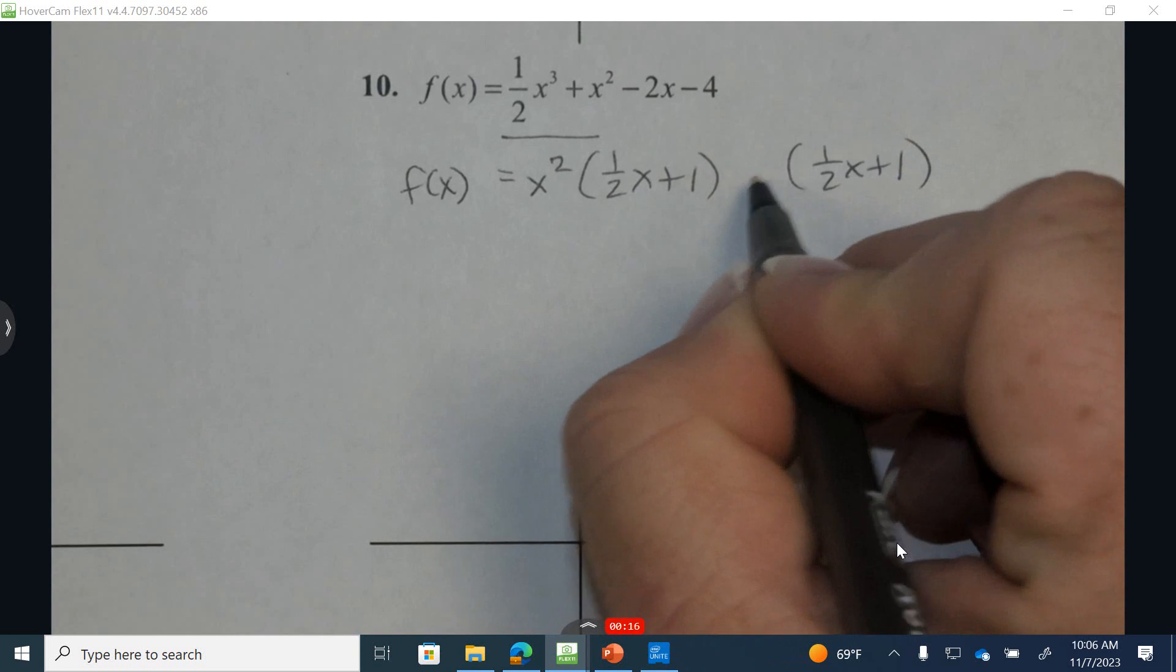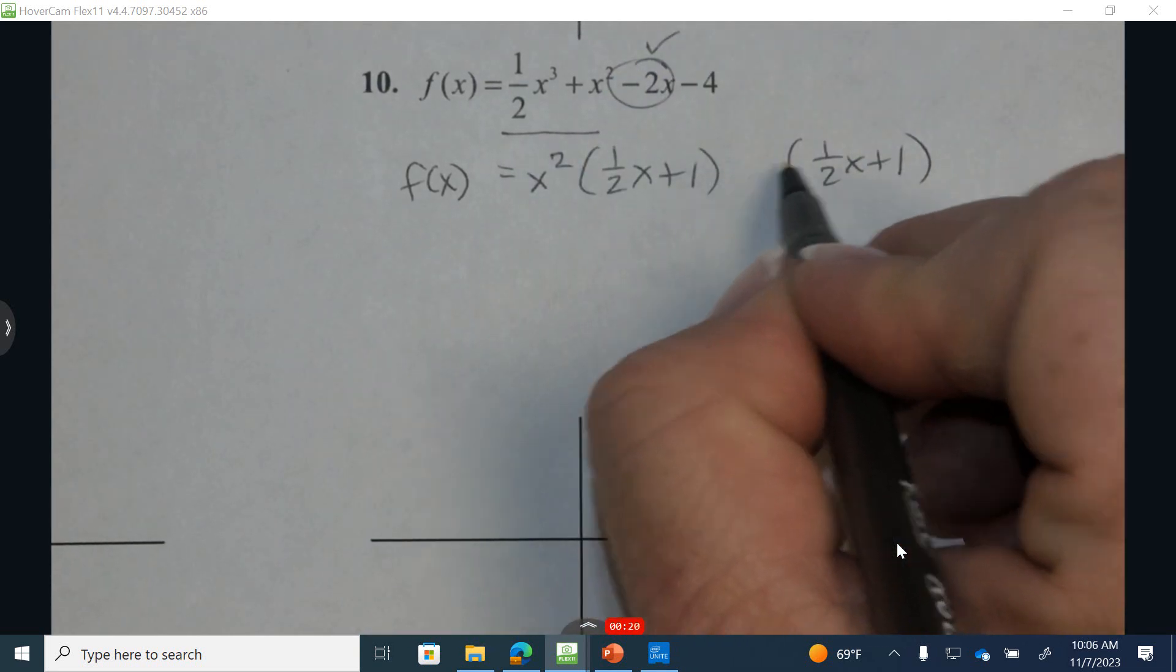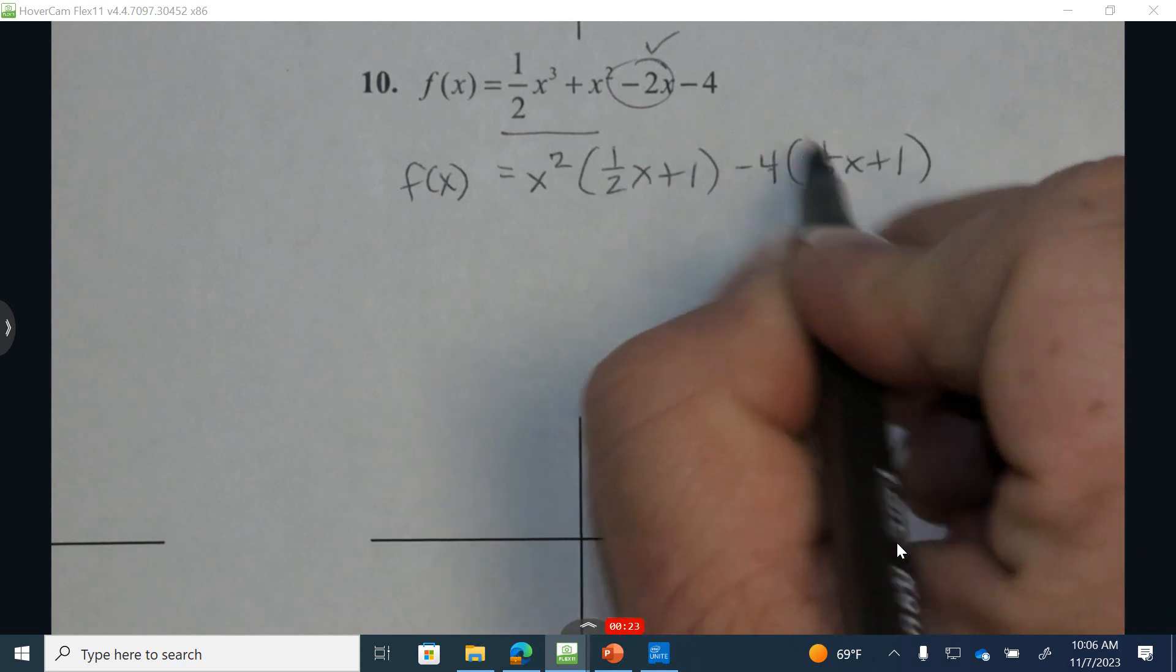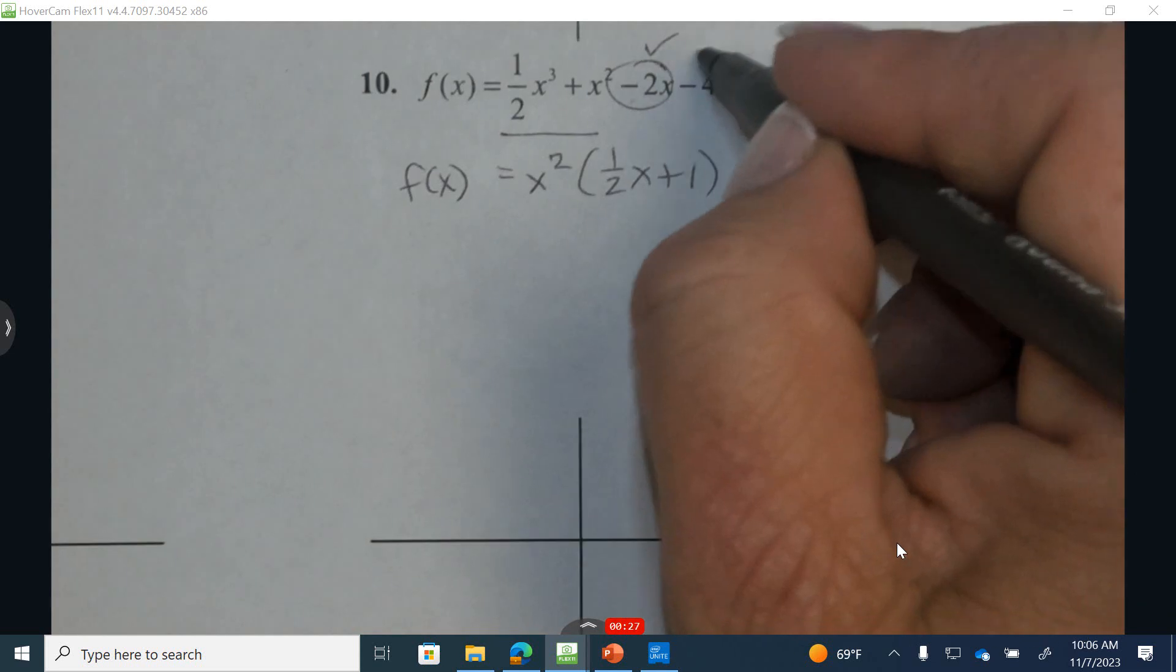Now I'm going to determine what value times 1 half equals negative 2. So half of what equals negative 2? Negative 4. Half of negative 4 is negative 2, and there's an x. And negative 4 times 1 is negative 4.